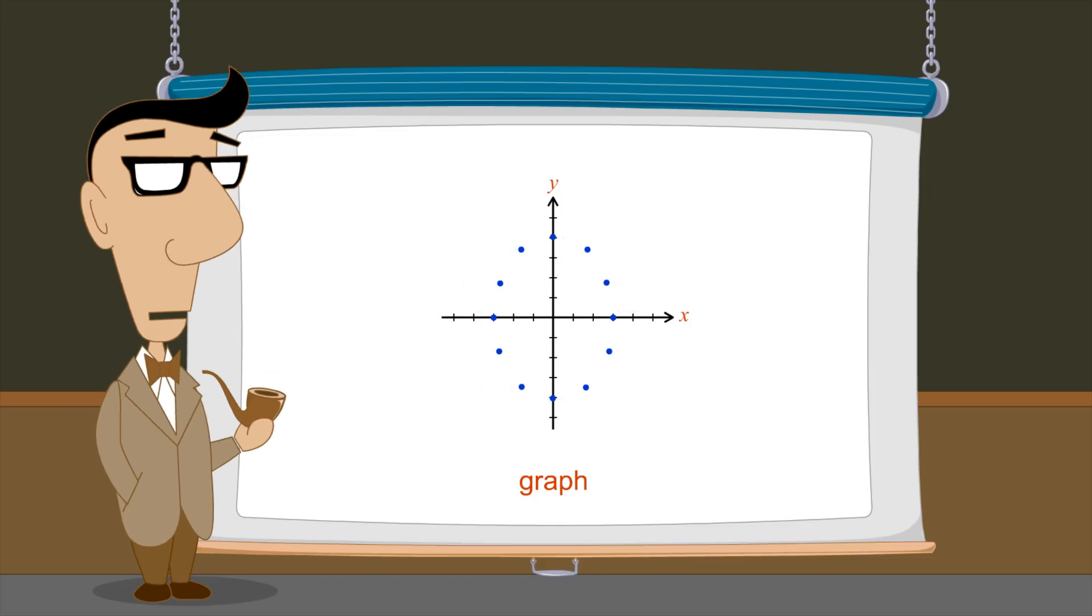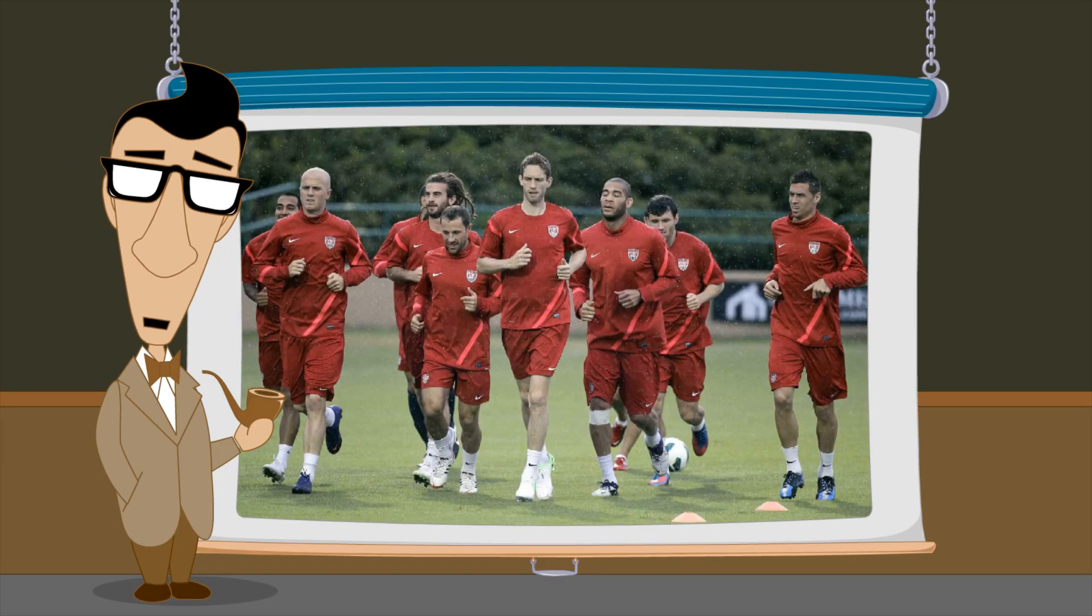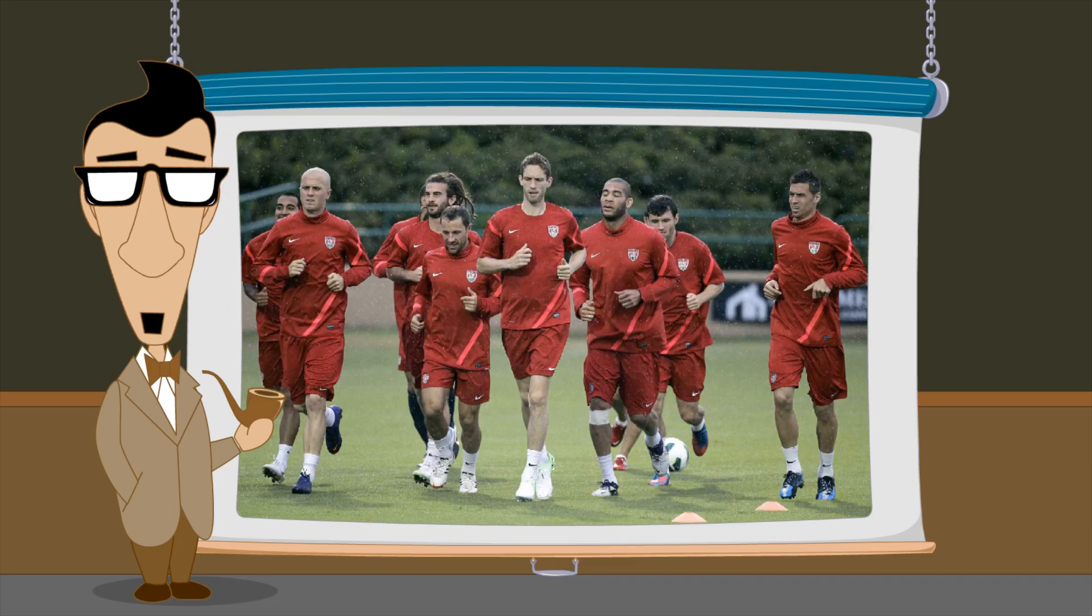Graphing a set of ordered pairs can be useful when trying to understand how two quantities may be related. For example, could there be some correlation between the height and weight of the members of the U.S. men's national soccer team?